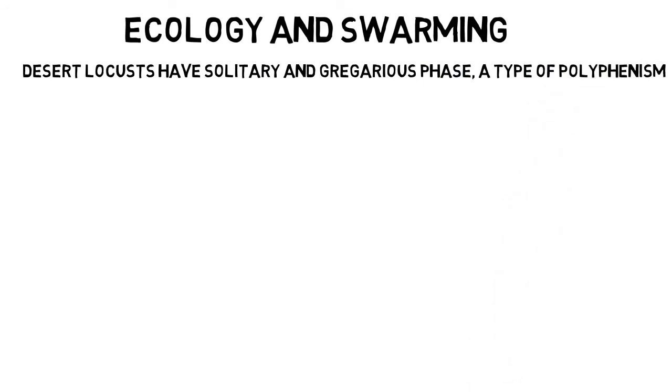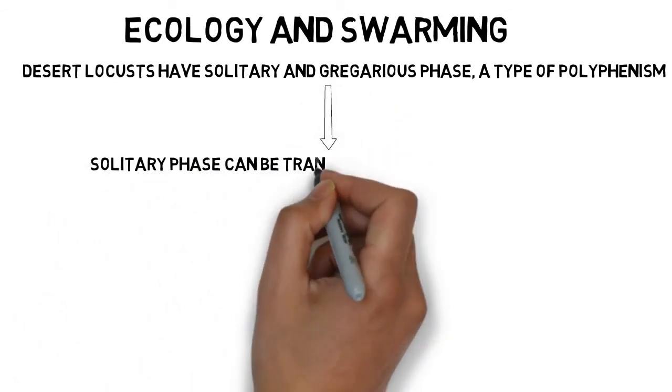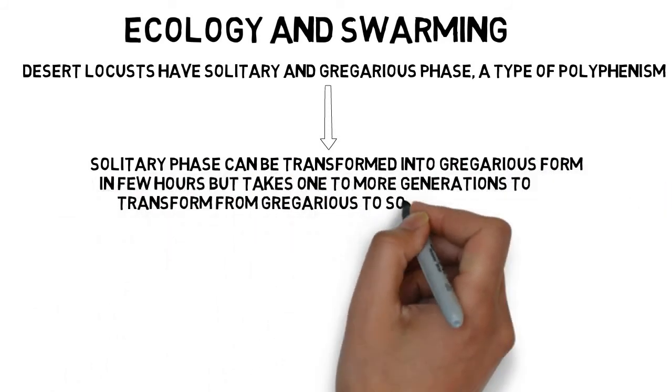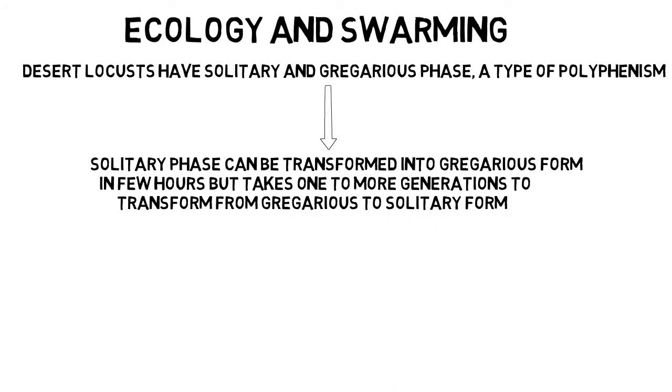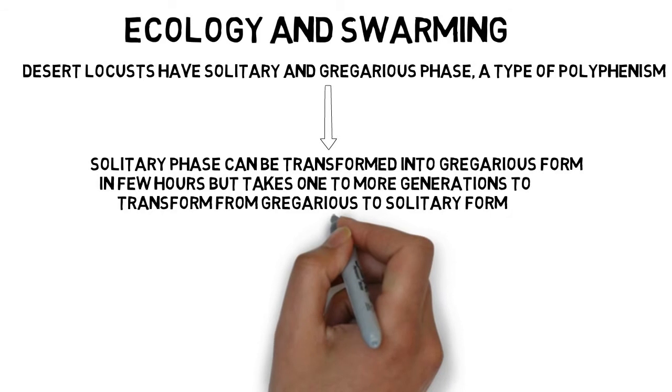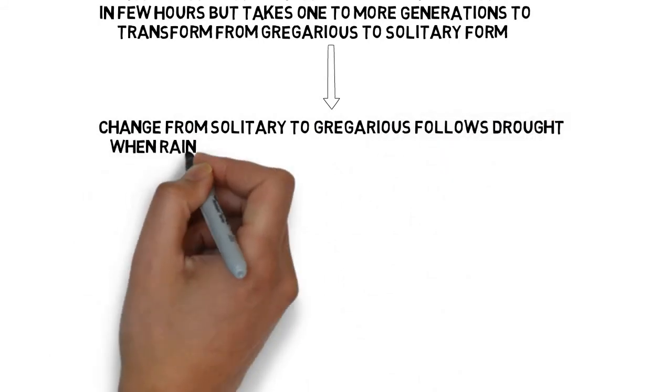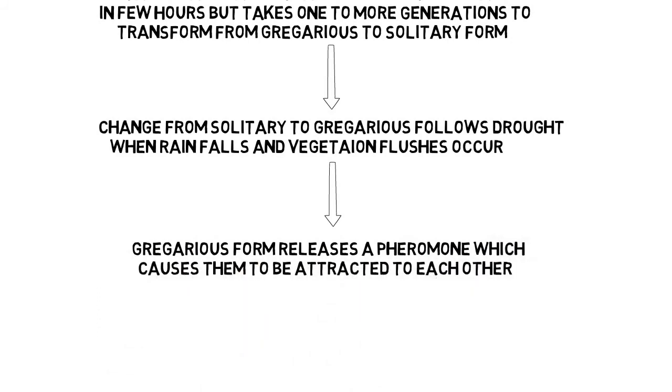Solitary locusts can behave gregariously within few hours of being placed in a crowded situation, while gregarious locusts need one or more generations to become solitary when reared in isolation. The change from an innocuous solitary insect to a voracious gregarious one normally follows a period of drought when rainfall and vegetation flushes occur in major locust breeding locations. When they fully transform into gregarious form, their bodies become shorter and give off a pheromone that causes them to be attracted to each other, enhancing hopper bands and subsequently swarm formation.